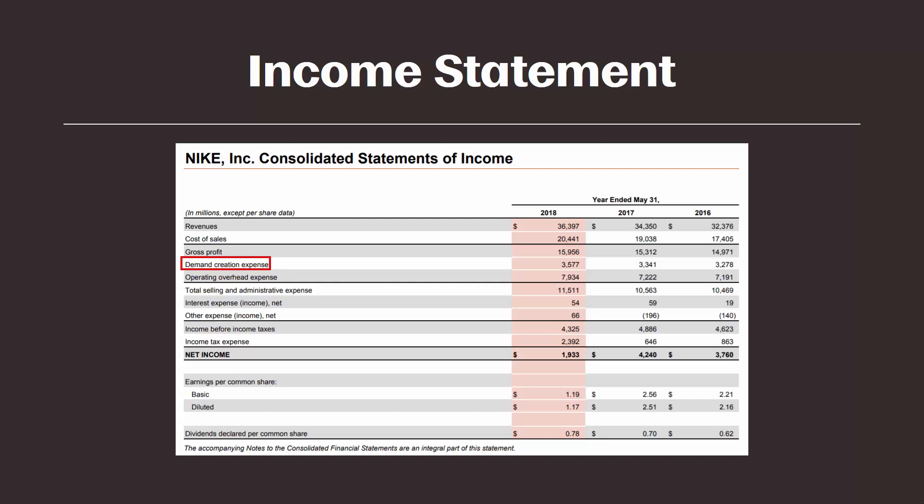Advertising does have to be expensed in the period it is incurred. It can't be recorded as an asset initially, even if it's going to benefit us in the future. It's just one of those accounting rules. So it makes sense that we would see a fairly large line item on Nike's income statement for advertising expense.